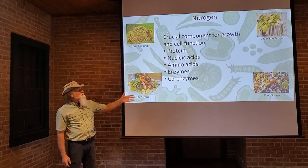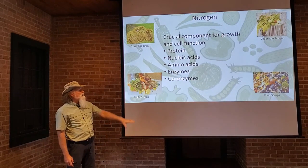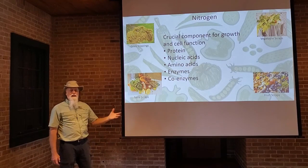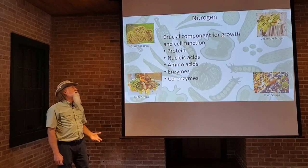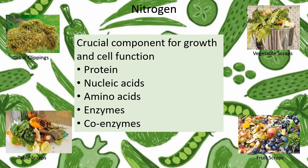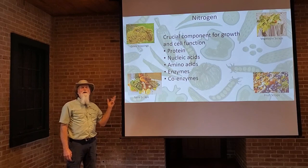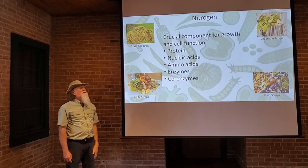Nitrogen. That's the green materials that we talked about — like the vegetable scraps, the fruit scraps, table scraps, grass clippings, that green type material. Nitrogen is crucial for cell growth and cell formation. Microbes use nitrogen to make proteins, nucleic acids, amino acids, enzymes, and coenzymes. Nitrogen is an essential part of all of those things.